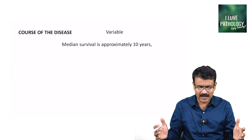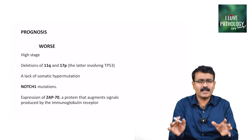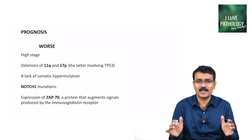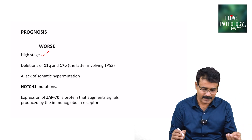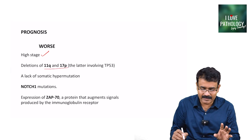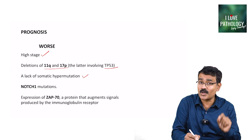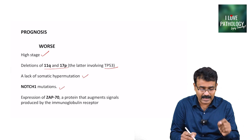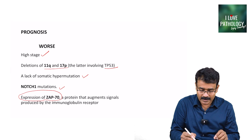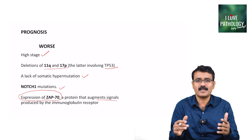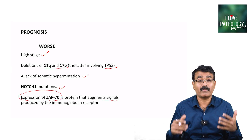The course of the disease is usually variable, with a median approximate survival of around 10 years. CLL has worse prognosis with high stage (Stage 3 or 4 in RAI, or Stage C in BINET), deletion of 11q and 17p involving the TP53 gene, lack of somatic hypermutation, NOTCH1 mutation, and — importantly — expression of ZAP70, a protein that augments signals produced by the immunoglobulin receptor. If ZAP70 is expressed, these patients have a particularly poor prognosis.